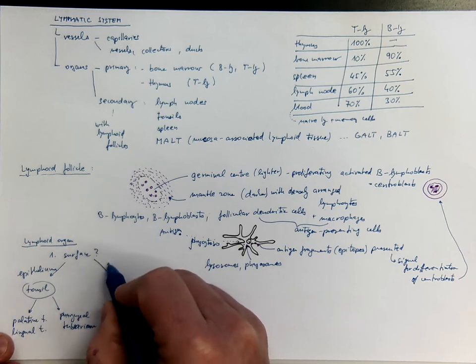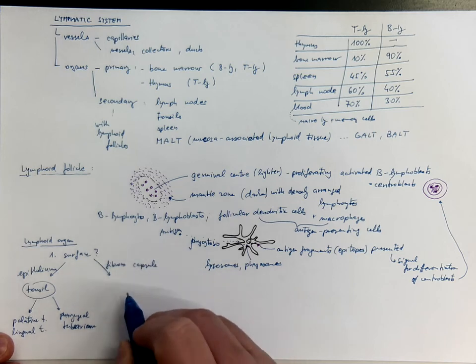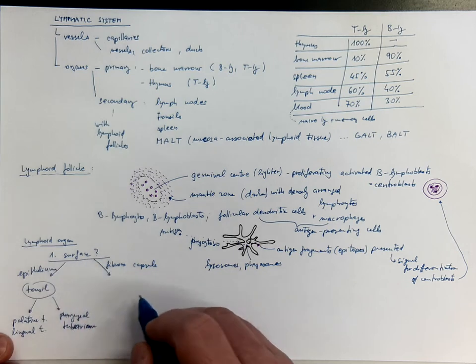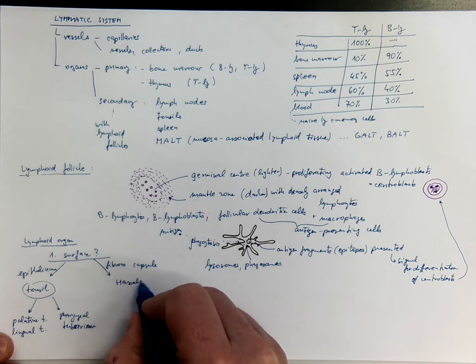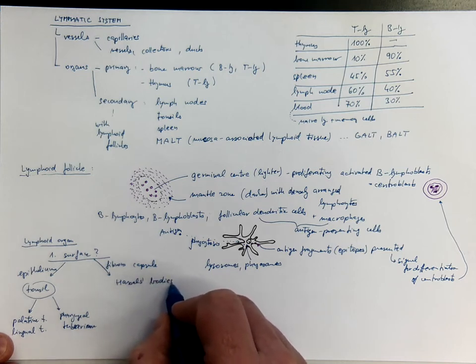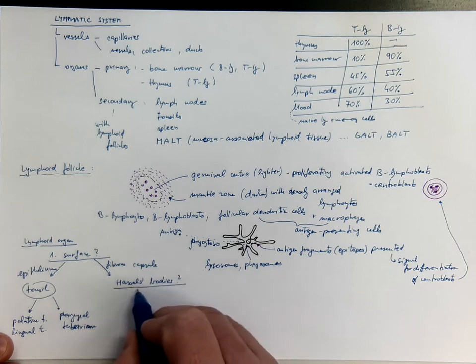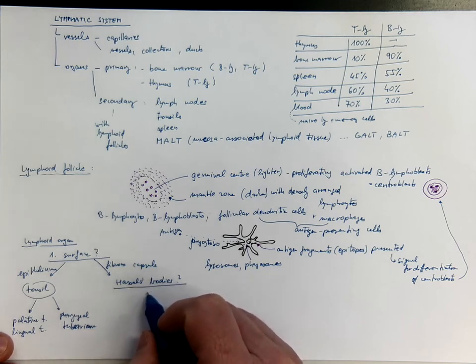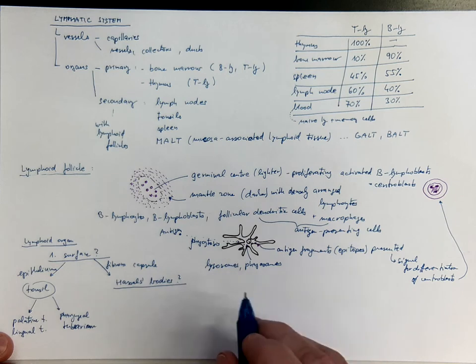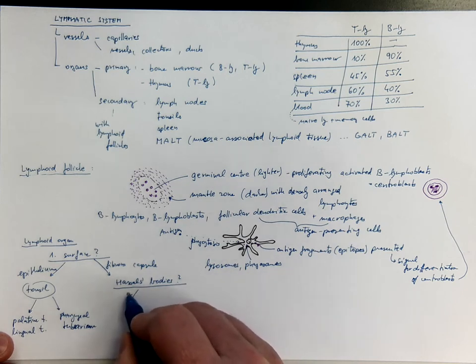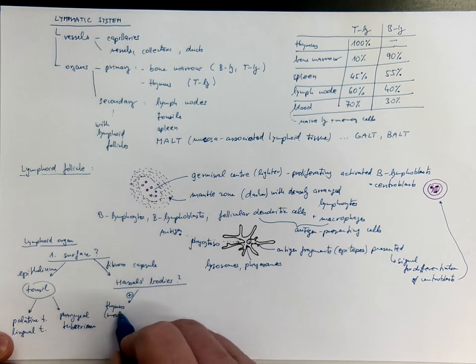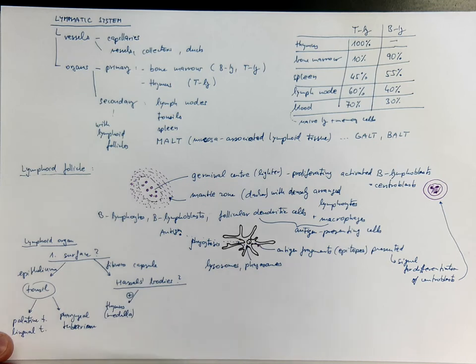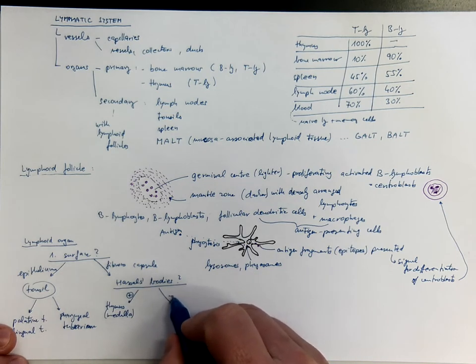Well, if there is no epithelium but a fibrous capsule on the surface, then you need to ask another question. And that would be, are there Hassall's bodies present? Once you will see Hassall's bodies in the slide of a thymus, you will never forget these. So if positive, you are looking on the thymus, the medulla of which contains these conspicuous Hassall's bodies.